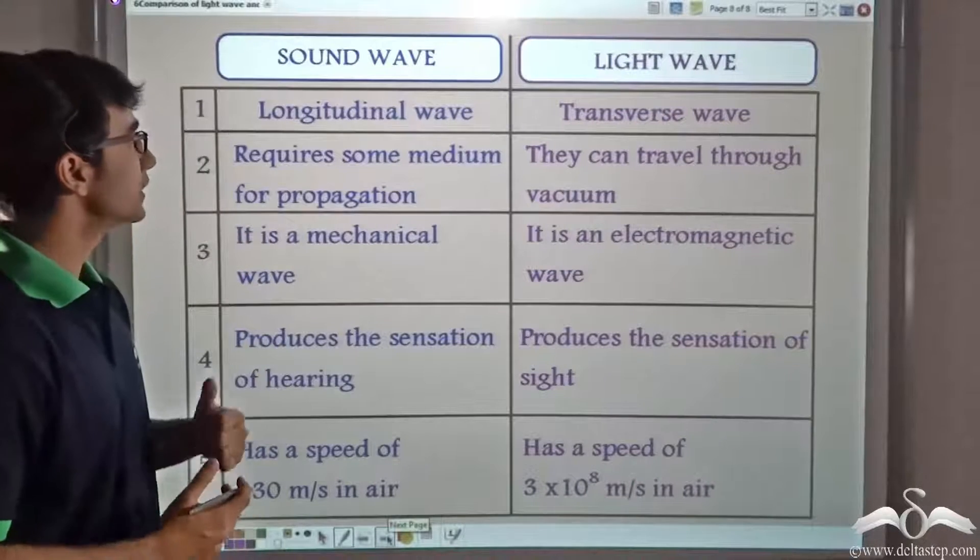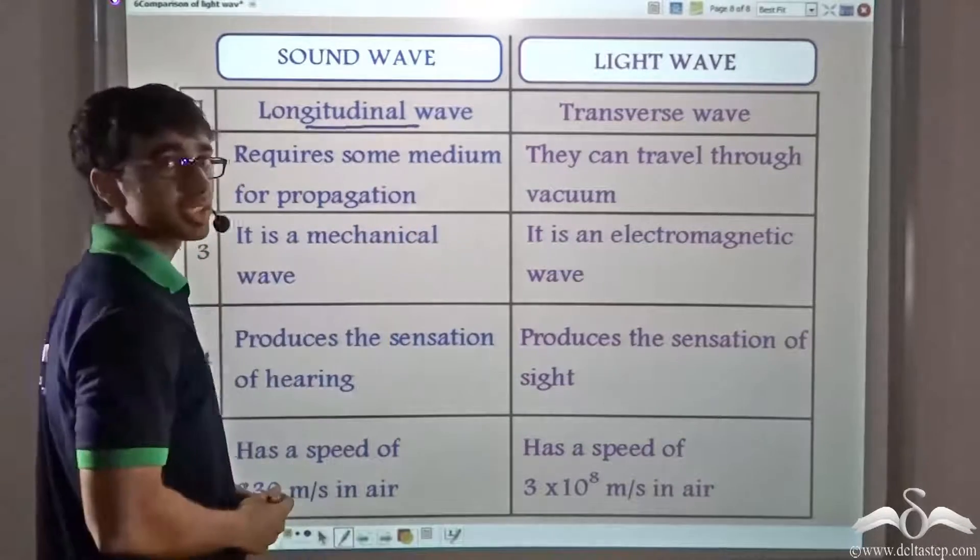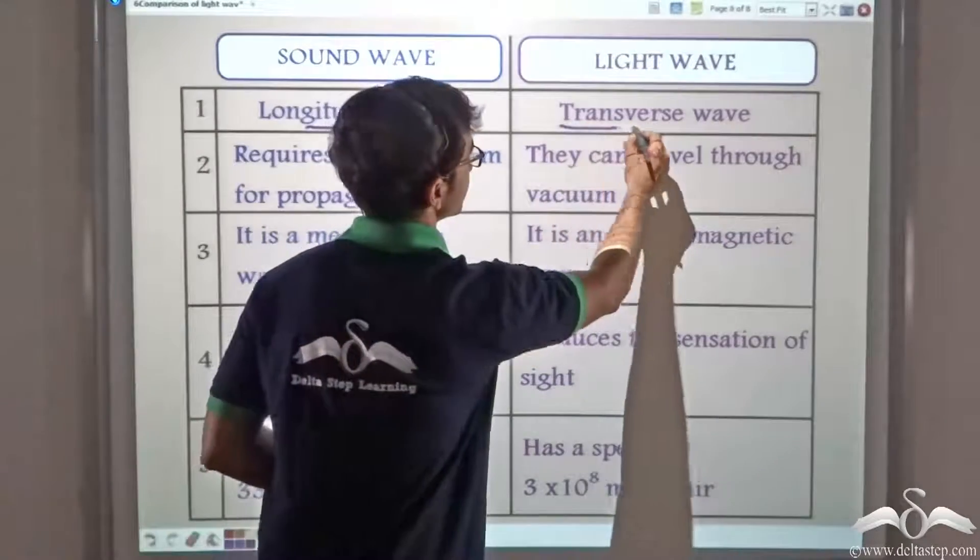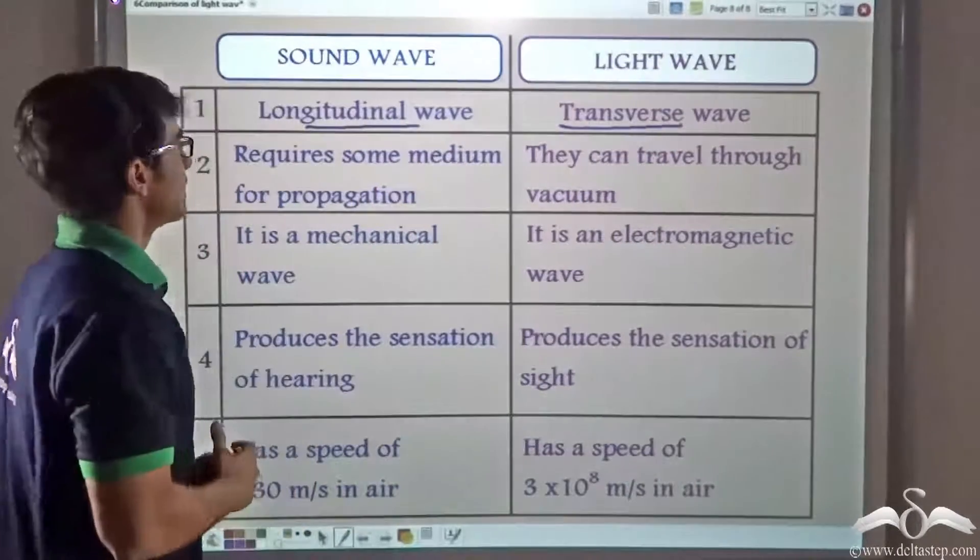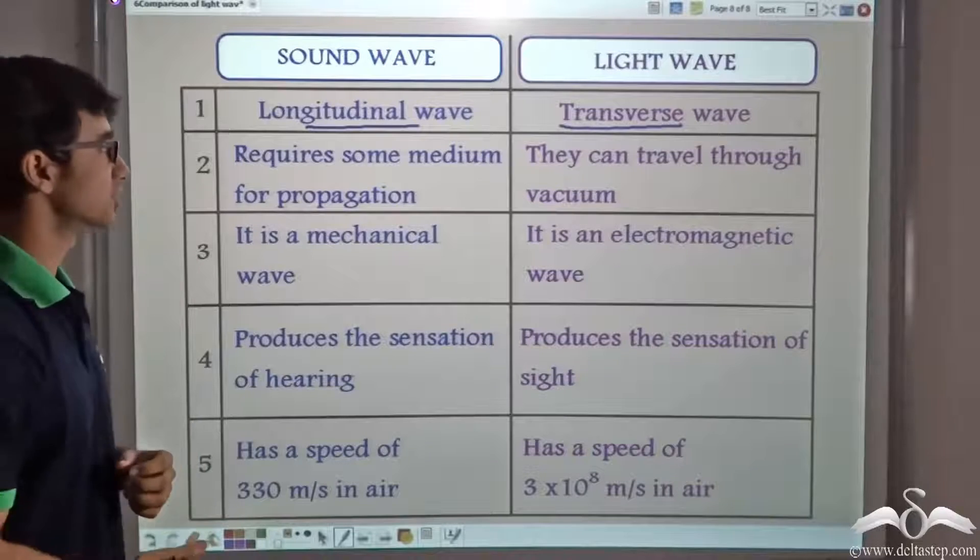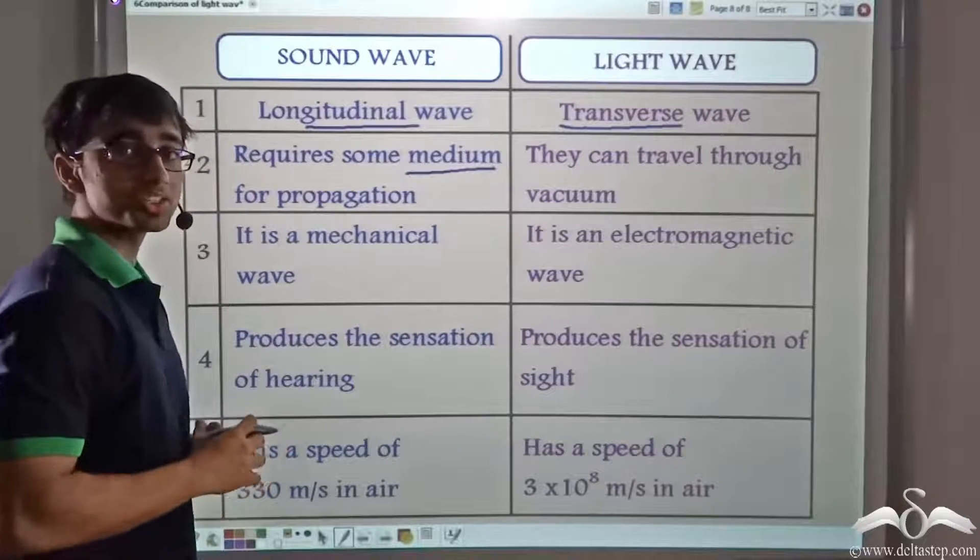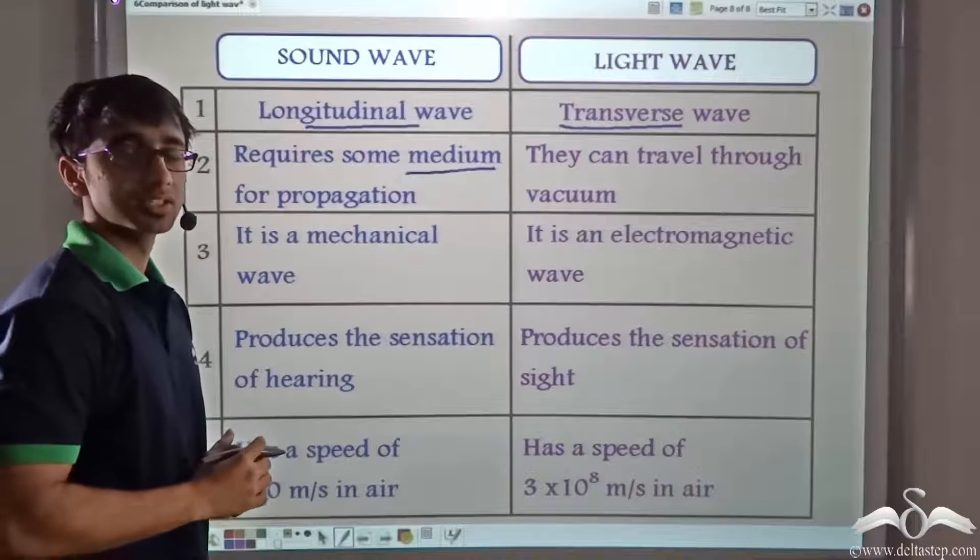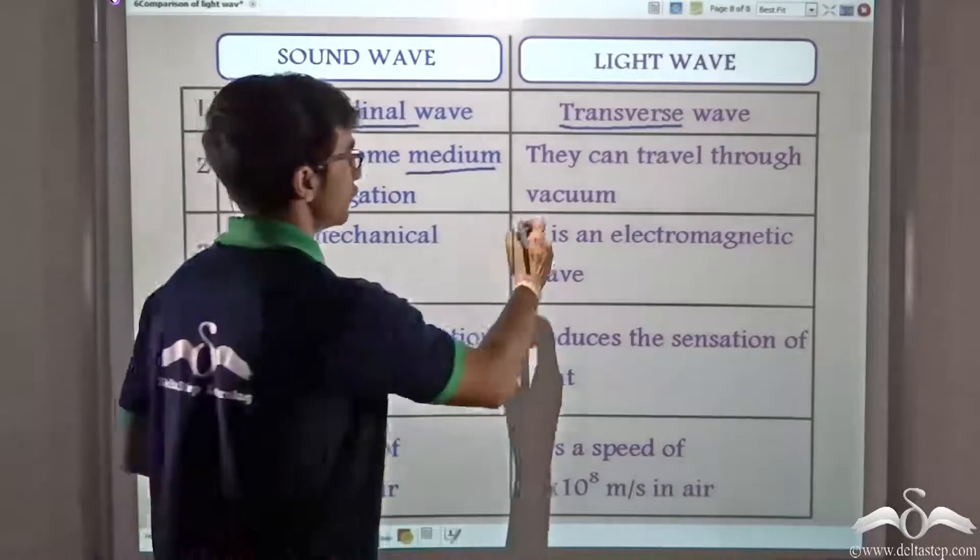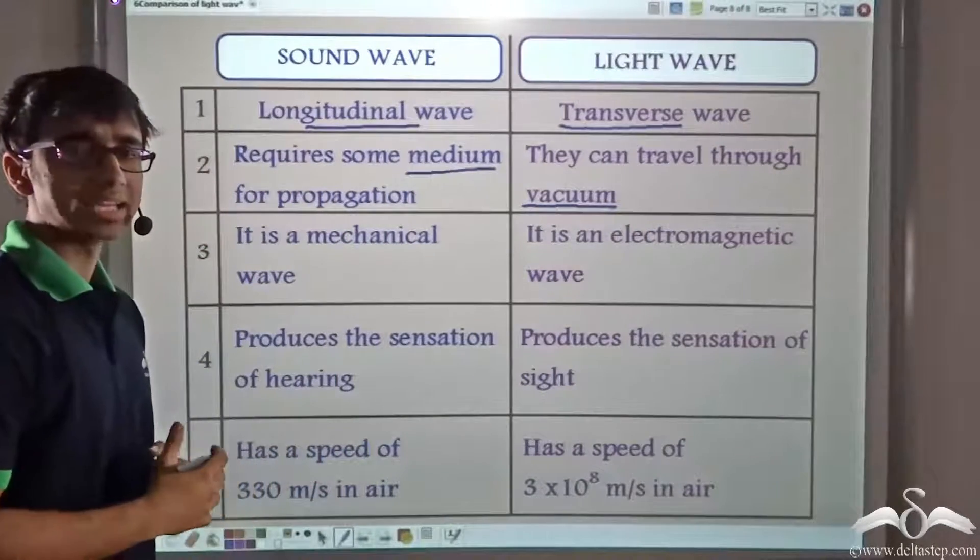Sound waves are longitudinal waves and light waves are transverse waves. As we just learned, sound waves require some medium for propagation. Whereas light waves, they do not require a medium for propagation. They can also travel through vacuum. Sound waves are mechanical waves.